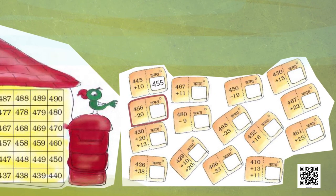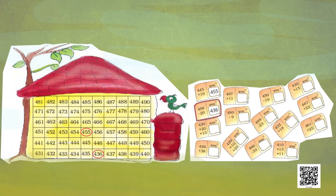Next envelope: 456 minus 20. What is it? Yes — 436. The correct room number is 436. Circle it. So our letter is delivered to room number 436.